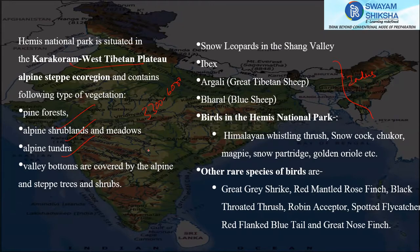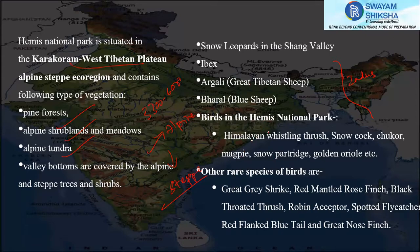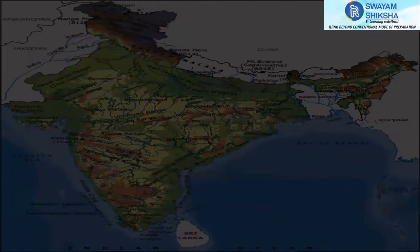The lower parts of the mountain regions of this national park contain steppe vegetation, giving it both rich flora and fauna. You can find the Himalayan marmot here, as well as the Tibetan wild ass. These are rare species, along with various birds and other wildlife present in Hemis National Park.